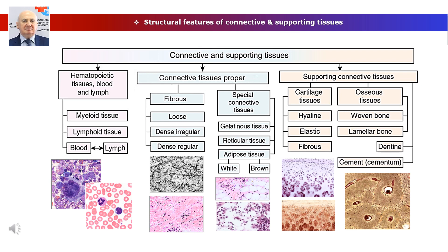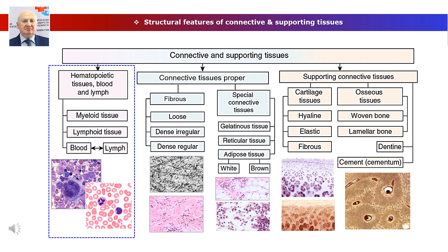The entire diversity of tissues of the internal environment can be represented in the form of a classification. The criteria for assigning tissues to different groups are features of cellular composition, structure of intercellular substance, functional specialization, and localization of tissues in the organism. The system of connective and supporting tissues includes hematopoietic tissues, connective tissues proper, and supporting connective tissues. Hematopoietic tissues are present in hematopoietic organs where blood and lymphatic formed elements are produced and differentiated.